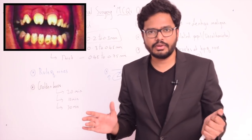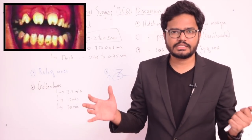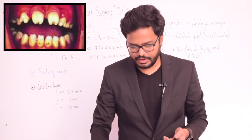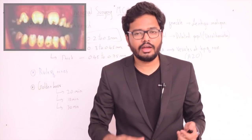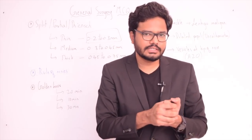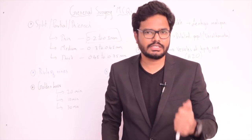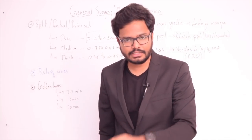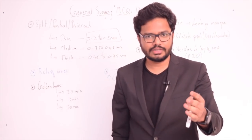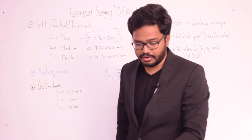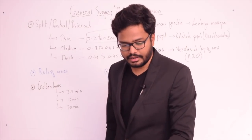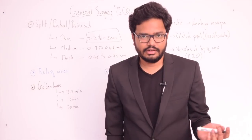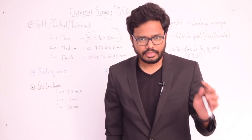Hutchinson's teeth are small, widely spaced, notched incisors seen in congenital syphilis — one component of Hutchinson's triad. The full triad consists of interstitial keratitis, notched incisors, and eighth nerve (auditory nerve) deafness.